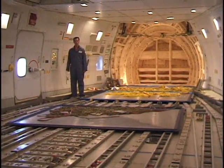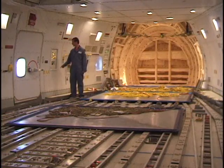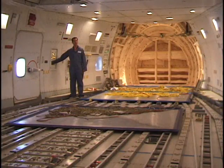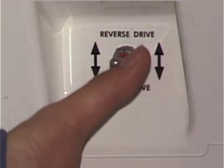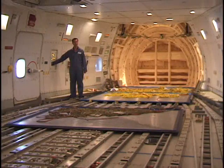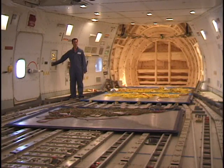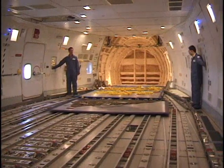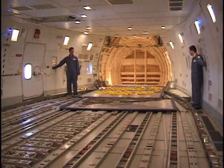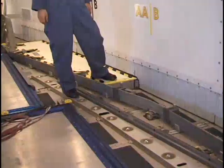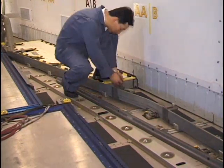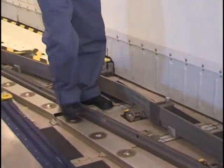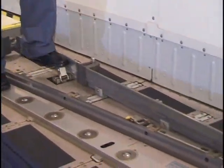Once the pallet has been steered into proper orientation, sequence 2 is selected. Steer drive is commanded both at the auxiliary control panel and control panel 5R, and the pallet is moved forward into the aircraft. Before moving the pallet into its final position, it is first necessary to stow the side guide rail and erect the three side restraint locks.